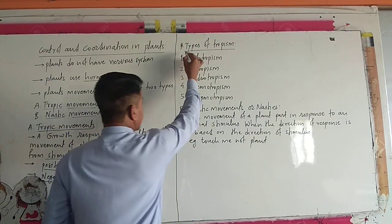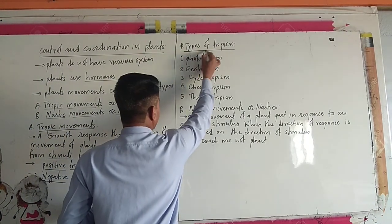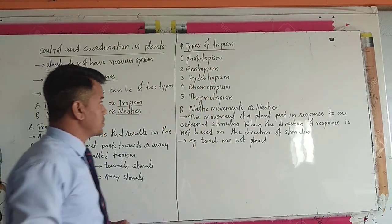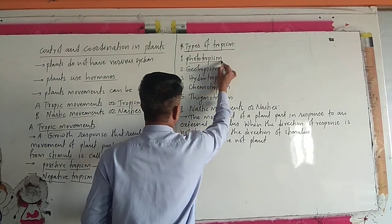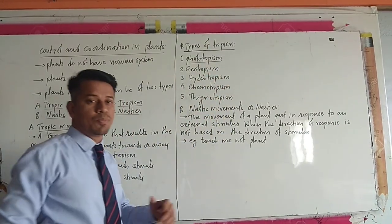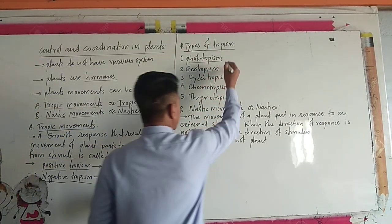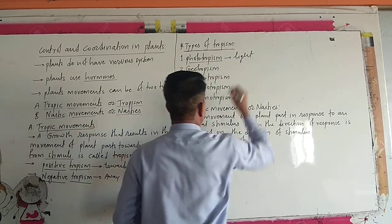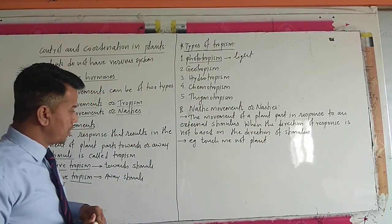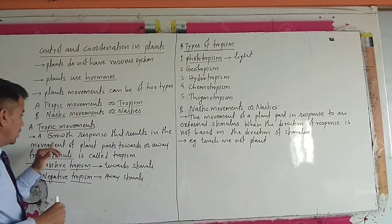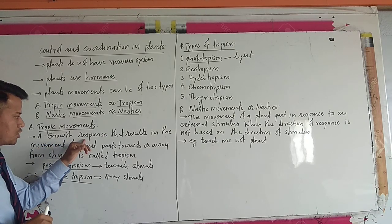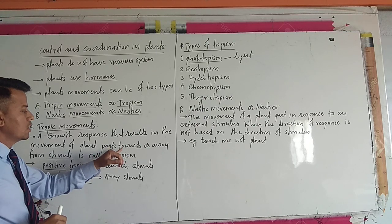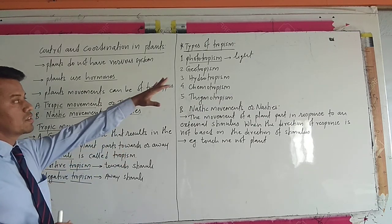In plants, there are several types of tropism. The first one is phototropism. Phototropism means they are sensitive to light — a growth response that results in the movement of plant parts towards the light.